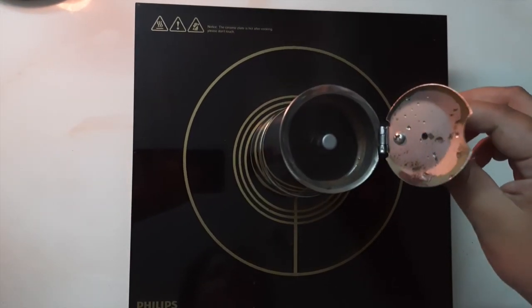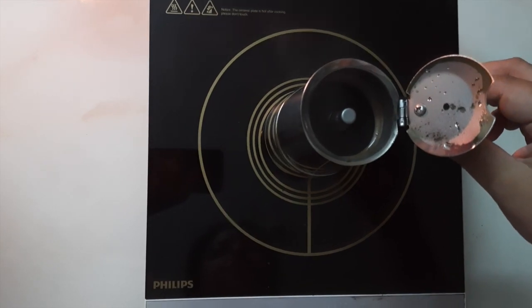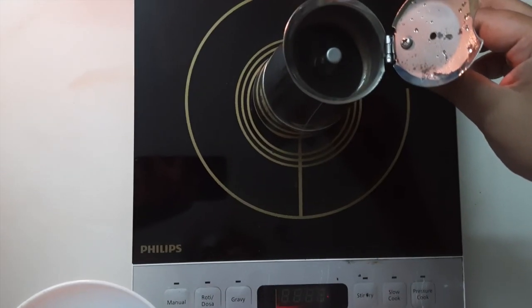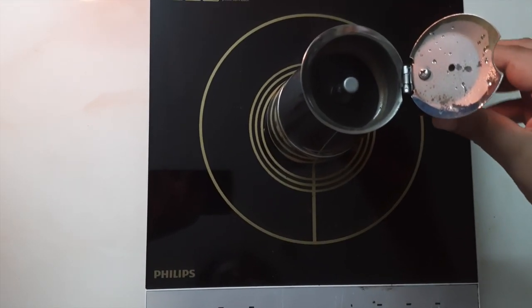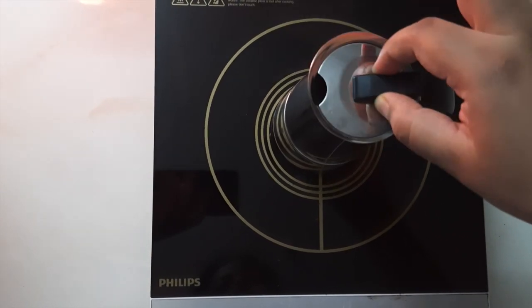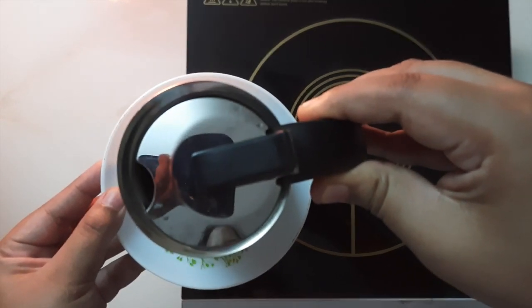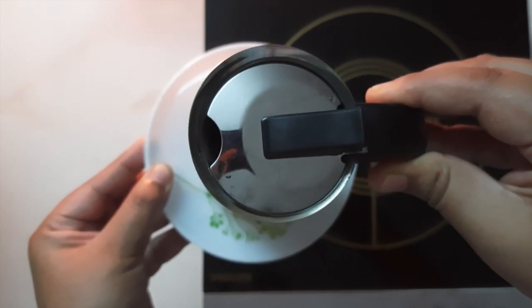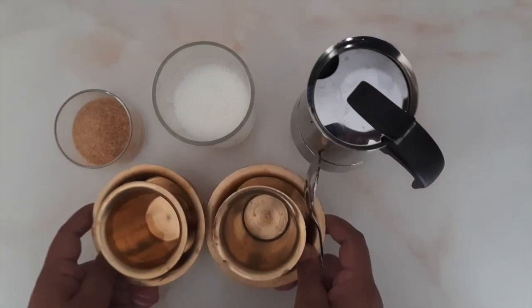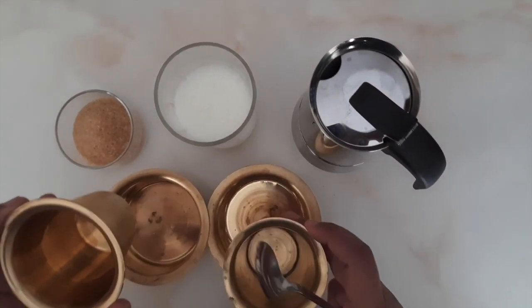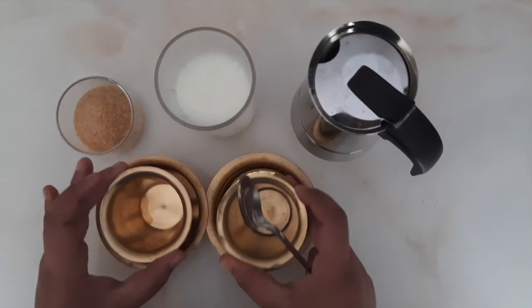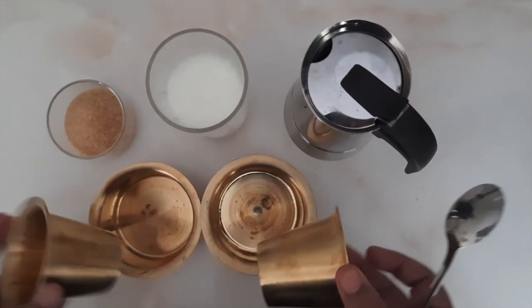So now you can see that we have collected the decoction, and it took about five minutes. Now let's take it off and put it on a surface. I want to tell you that this is very hot. So now let's start making the filter coffee. I have these two beautiful Dabra.